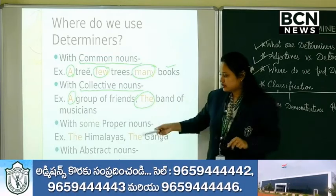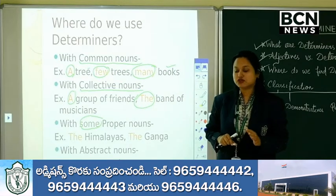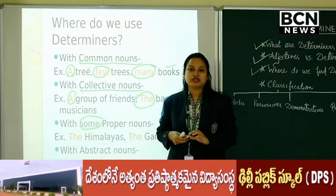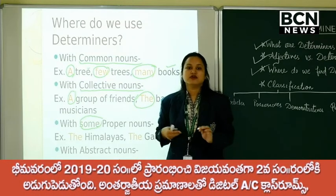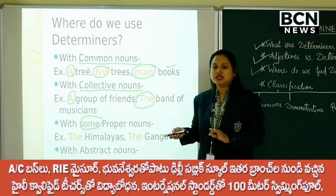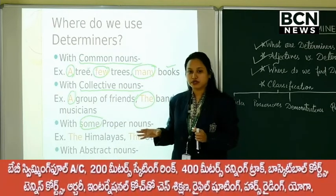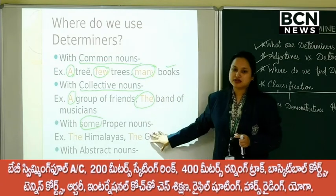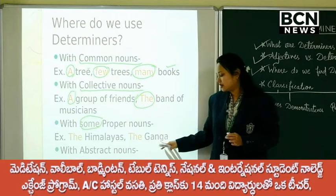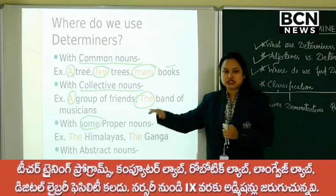Next, determiners are used with some proper nouns — not all proper nouns, but some. If you say your name or your friend's name, we don't use the or a before it. For a name like Rohit or Mohit, I will not say the Rohit or the Mohit. But with some proper nouns we use determiners — like the Himalayas, talking about the mountain range, or the river Ganga. With particular newspaper names or river names we use determinants.